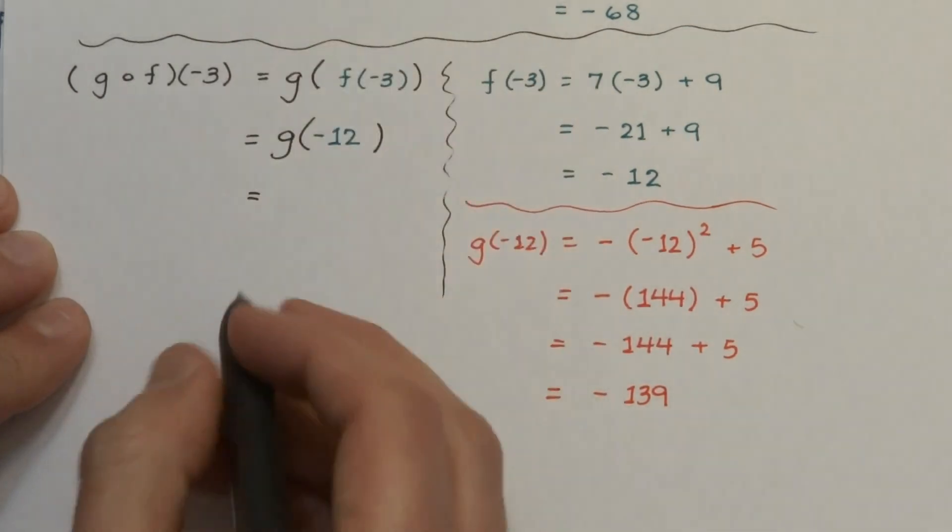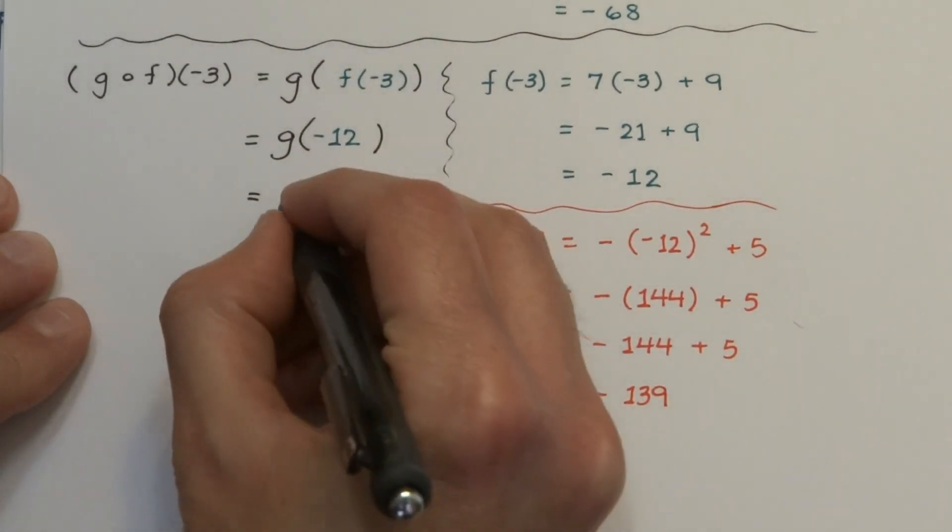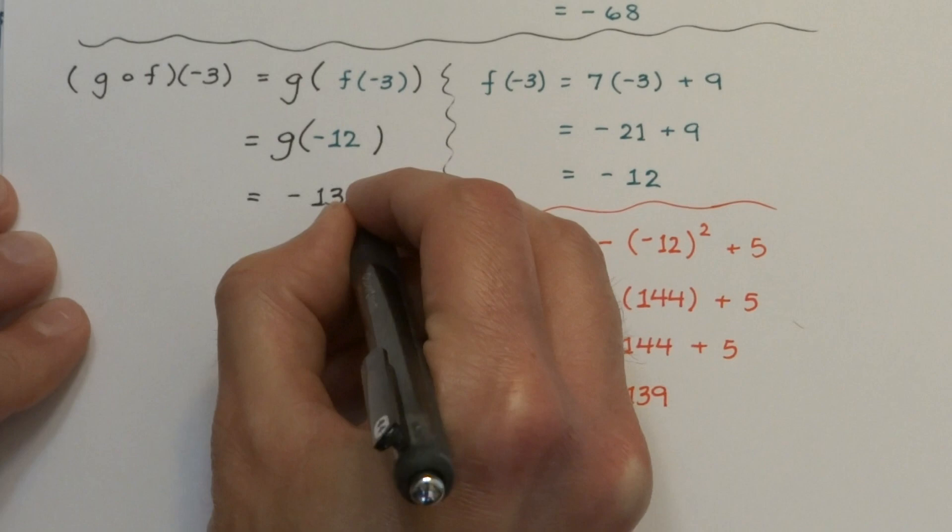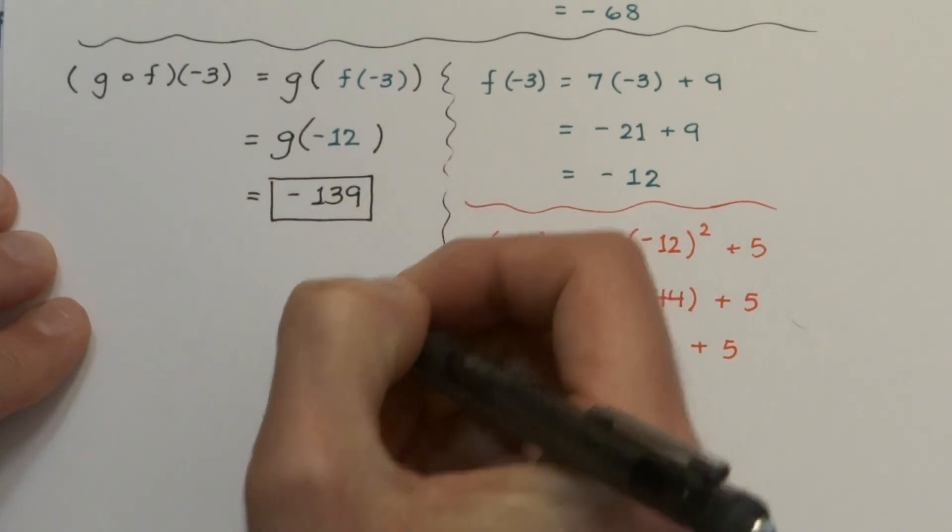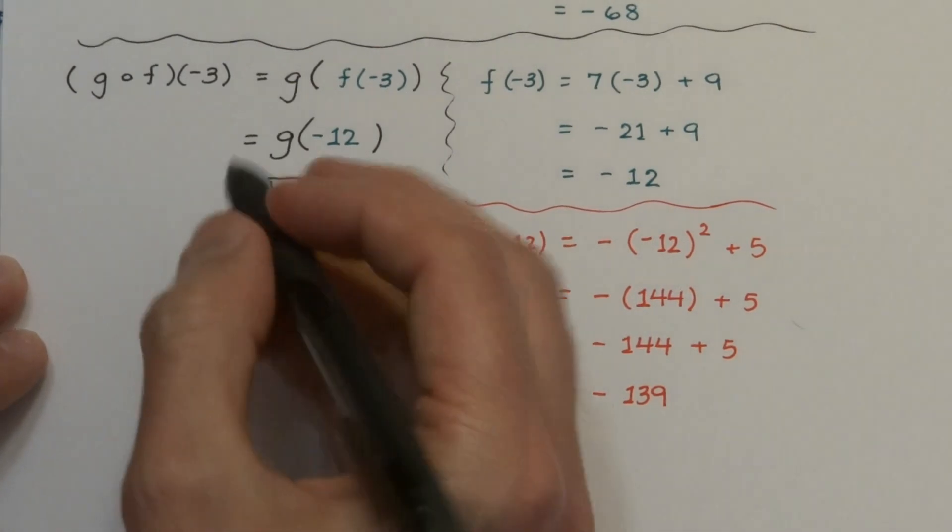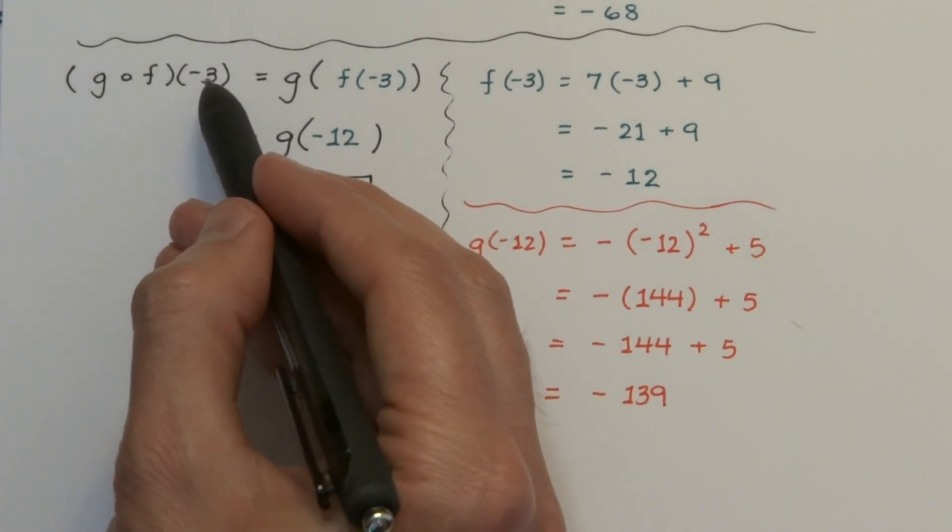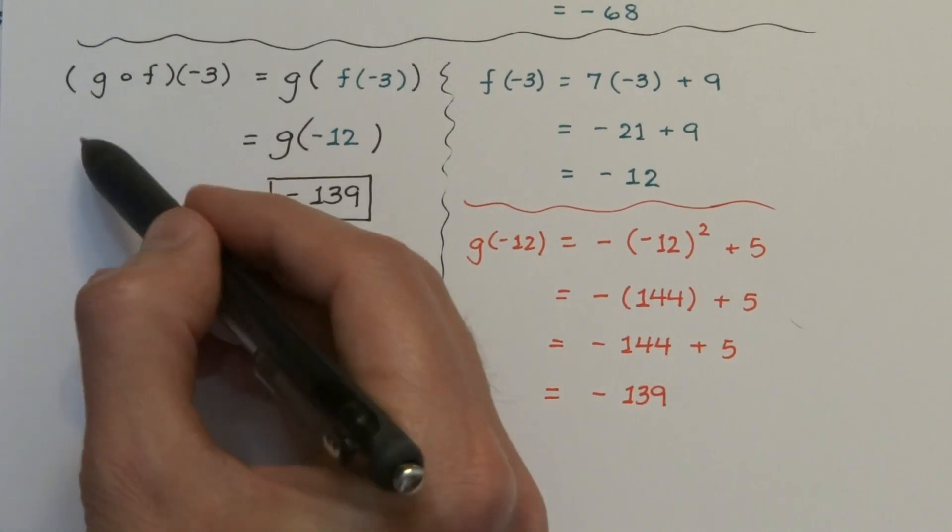So for the main part of our work, g of negative 12 equals negative 139. Remember, function composition order is everything. So here the negative 3 gets plugged into f first, and then that result gets plugged into g.